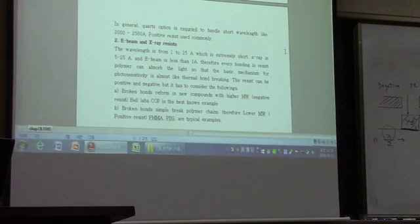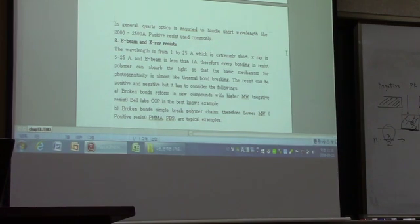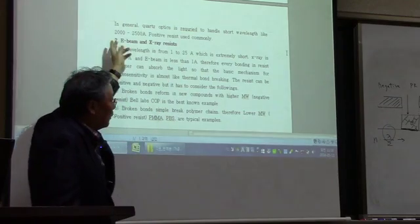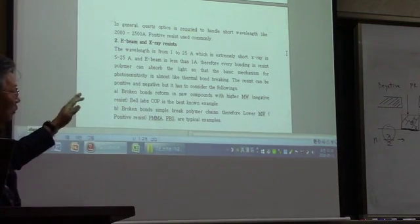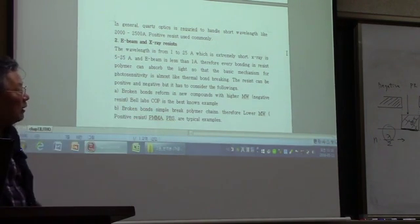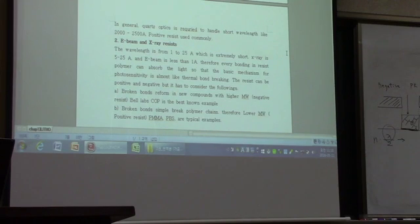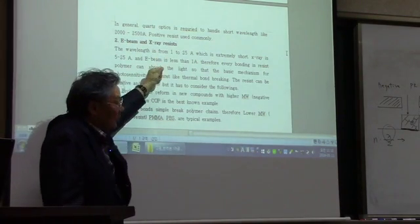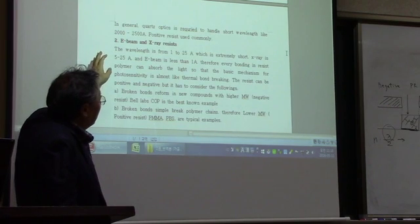Special optics are required to handle short wavelengths like 2000–2500 angstroms. Positive resist is used commonly, and the reason we use positive resist for deep UV is that deep UV is aimed at high resolution, and positive PR is beneficial for high resolution compared to negative PR. That's why in deep UV lithography, positive photoresist is used commonly.